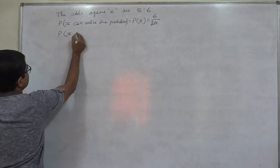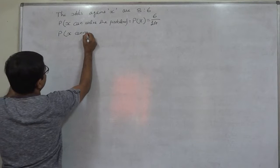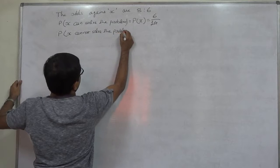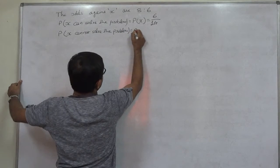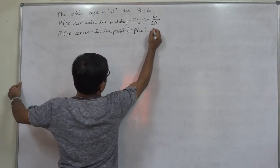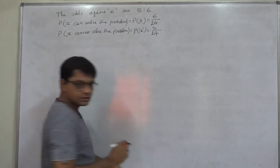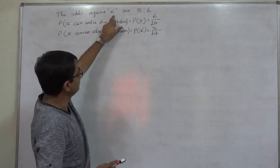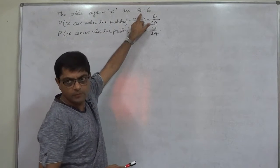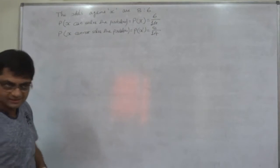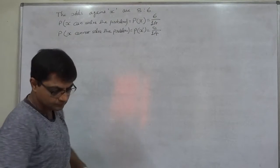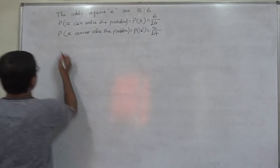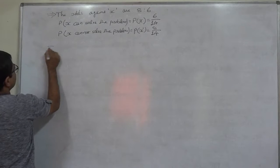The probability that X cannot solve the problem, P(X complement), will be 8 by 14. The rule is: if the wording says 'odds against,' the first number is for the complement event and the second number is for the success or original event.